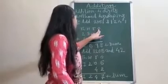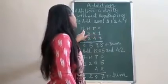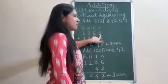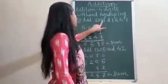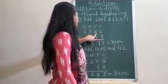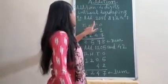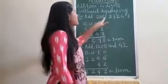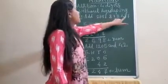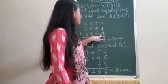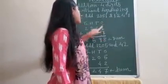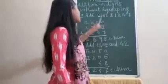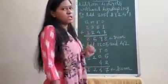So I have written ones, tens, hundreds, and thousands. One will be at ones place, five is at tens place, three is at hundreds place, and two at thousands place. Same way, here seven is at ones place, four is at tens place, two is at hundreds place, and one is at thousands place.